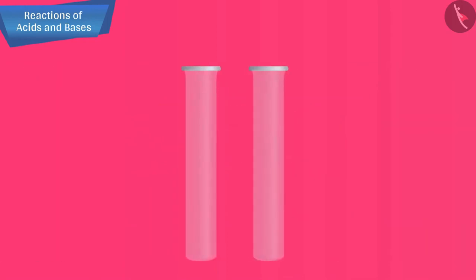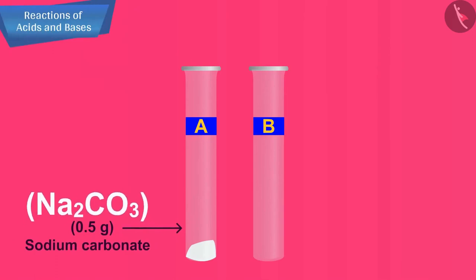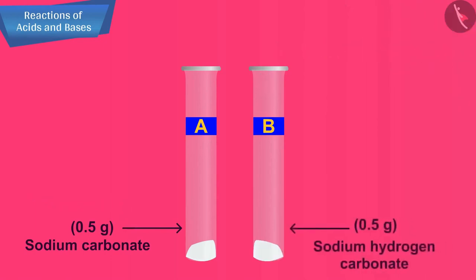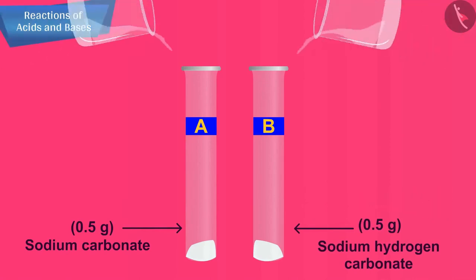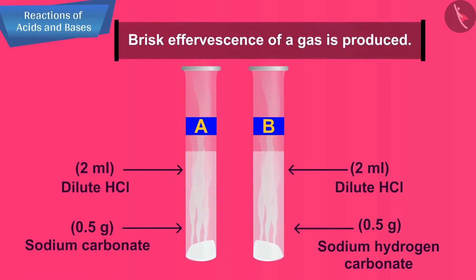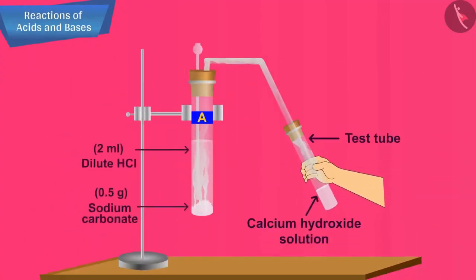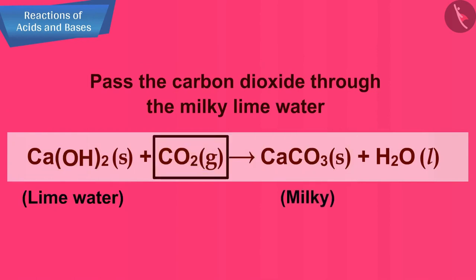Let us understand this by an activity. Take two test tubes and label them A and B. Take about 0.5 g of sodium carbonate (Na2CO3) in test tube A and 0.5 g of sodium hydrogen carbonate (NaHCO3) in test tube B. Add about 2 ml of dilute HCl to both test tubes. You will observe brisk effervescence of a gas. Pass the gas produced through lime water (calcium hydroxide solution). You will observe that the lime water turns milky, which shows that the gas evolved is carbon dioxide.